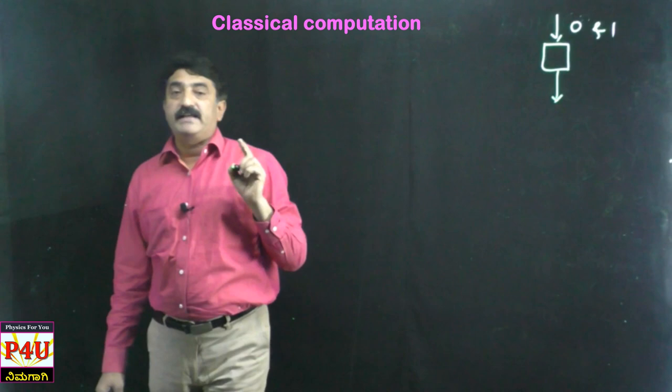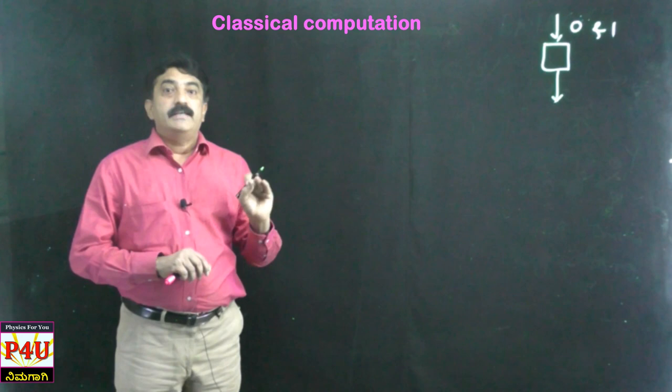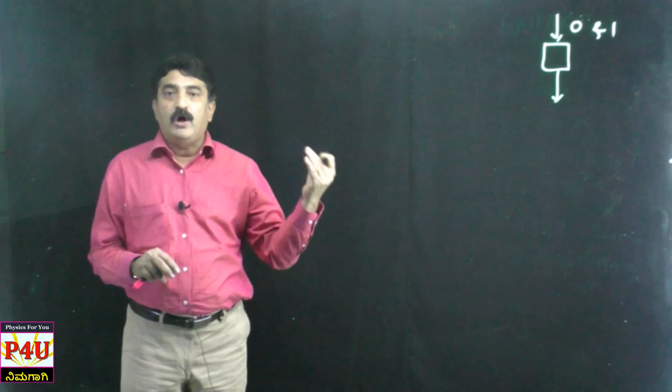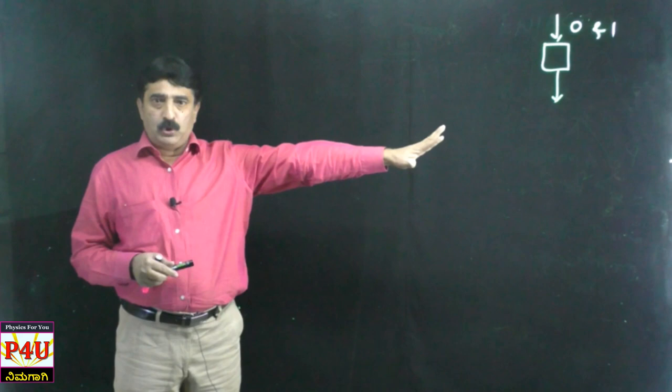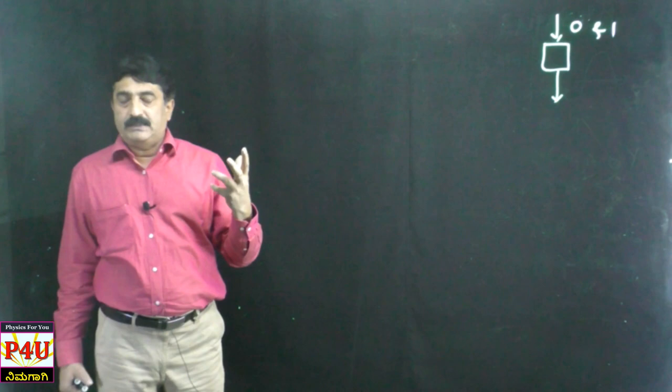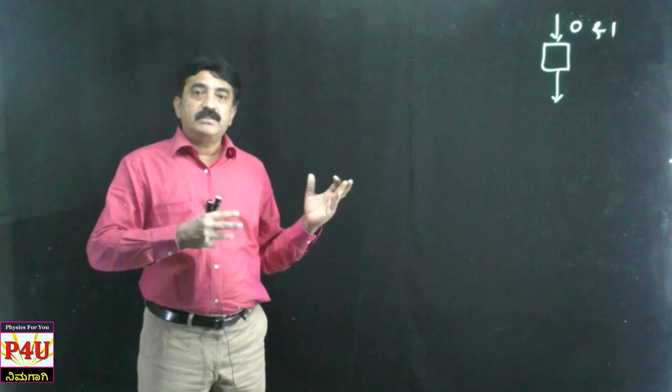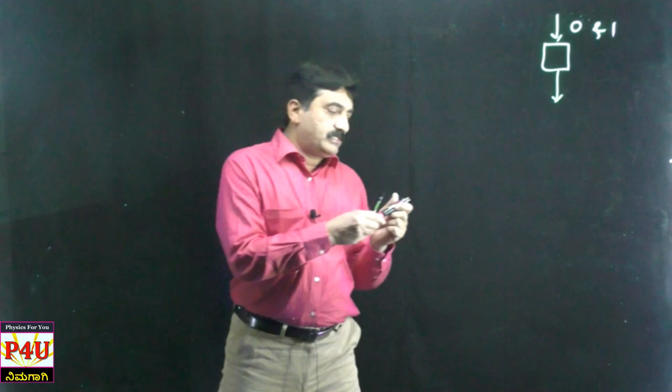0 and 1 — two options, that's all. 0 means on, 1 means off. Or 0 means open, 1 means closed. 0 means bottom, 1 means top. Something like that. So in order to store something, I need two options — 0s and 1s. Initially these 0s and 1s were in the form of on and off of a bulb.